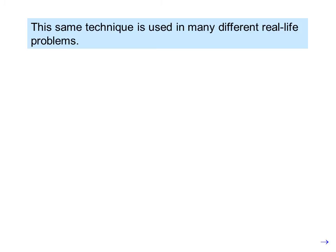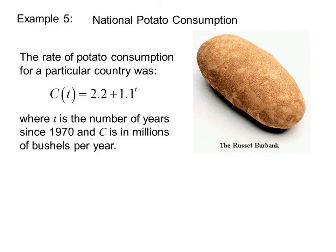This same technique is used in many different real-life problems. Example 5: National potato consumption. The rate of potato consumption for a particular country was c(t) = 2.2 + 1.1^t. So potato consumption was growing exponentially. Where t is the number of years since 1970 and c is in millions of bushels per year.